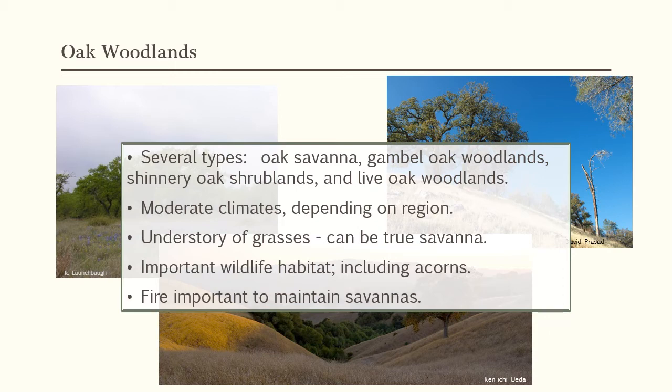As you move up in elevation out of the Central Valley, the climate is a little more moderate and cooler in the summer, though still very dry. The understory of grasses really can form a true savanna, as the pictures show. Oak woodlands are really important for wildlife, especially because of acorns — oaks produce a really high-fat food source. Fire is also important to maintain these systems, as it is in most savannas.